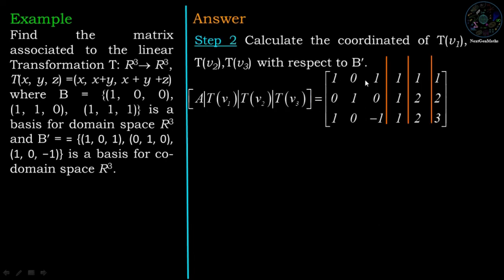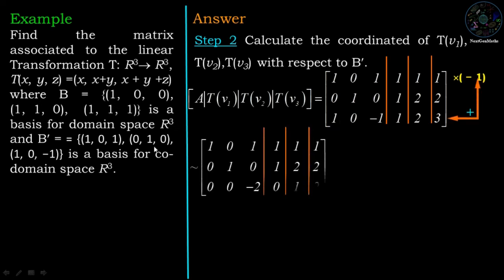Now we apply row operations so the first part converts into the identity matrix. For the identity matrix, the first column needs a 1 in the first entry and 0s elsewhere. We first try to make the third entry 0 by multiplying the first row by -1 and adding it to the corresponding entries of the third row. This gives the third row as: (0, 0, -2, 0, 1, 2).